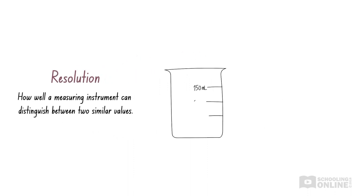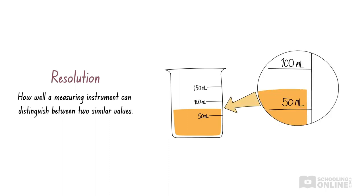For example, let's look at this glass of orange juice. Using this beaker, which has increments of 50 millilitres, we can say the volume is approximately 70 millilitres. However, we can't be certain about the value, since it lies somewhere between the 50 and 100 millilitre mark.